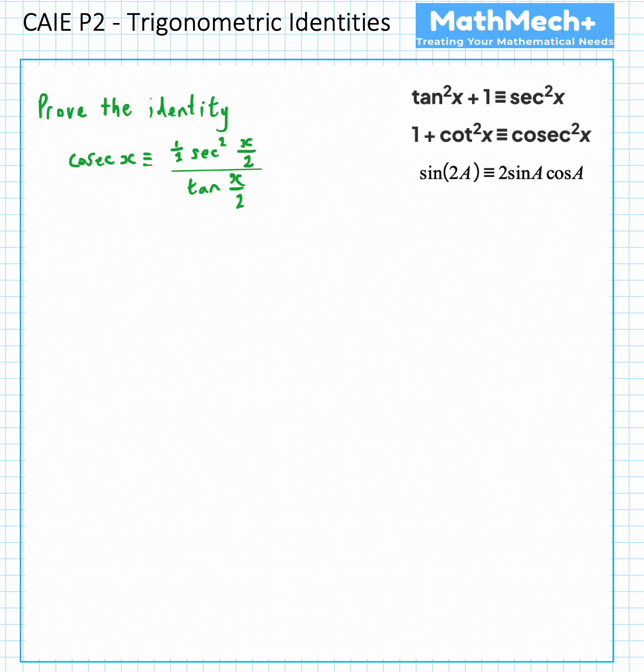In this question on trigonometric identities for Pure 2 or indeed Pure 3, for cosec x which is equal to 1 over sine x, we have to make that equality relate to the mathematical expression on the right hand side. It looks a bit daunting in fairness, so we have to find a way of getting these things in the question.